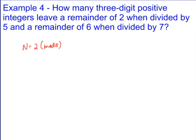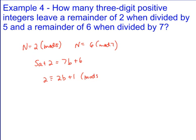2 mod 5, 6 mod 7. And so you're going to get 5a plus 2 equals 7b plus 6. Go through mod 5 and you're going to get 2 is equivalent to 2b plus 1 mod 5, which is going to give you 1 equals 2b. So we're going to end up with 2b is equivalent to 1 mod 5.